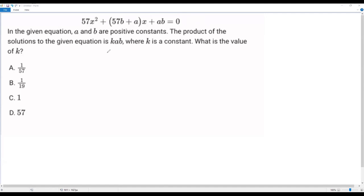So the product of the solutions is given as k times ab. Whenever I solve a quadratic equation, I'll be getting two values for x, two solutions, because the degree, the largest exponent of the variable in a quadratic equation, is two.